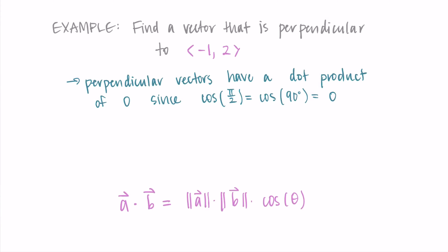So looking at that formula, that is that the dot product is equal to the magnitudes times cosine of the angle between them, that cosine of the angle between them will be 0.